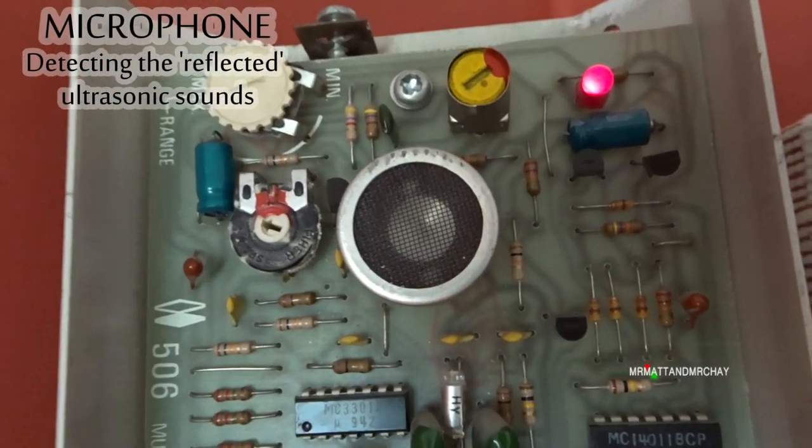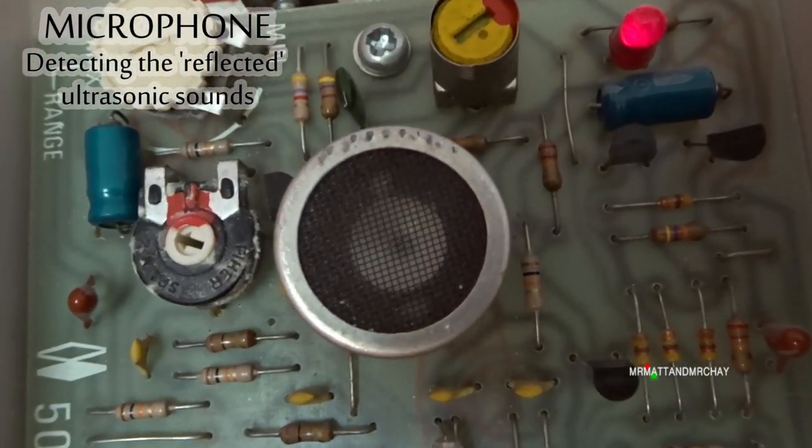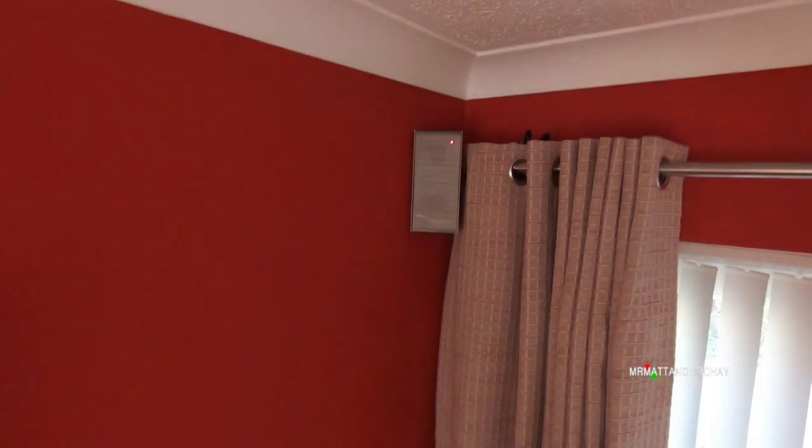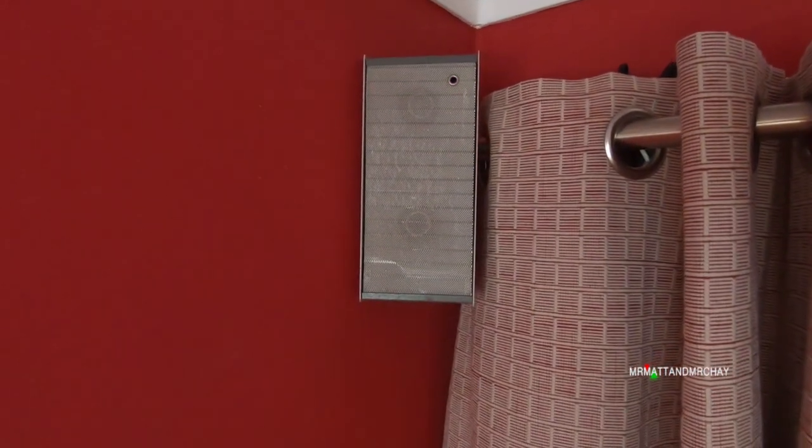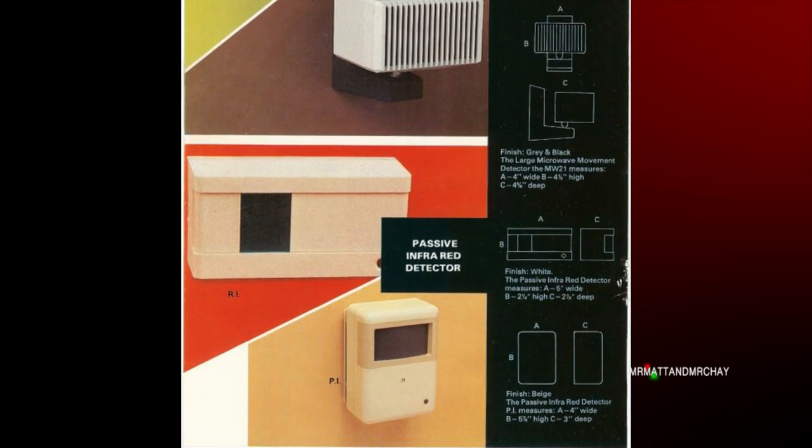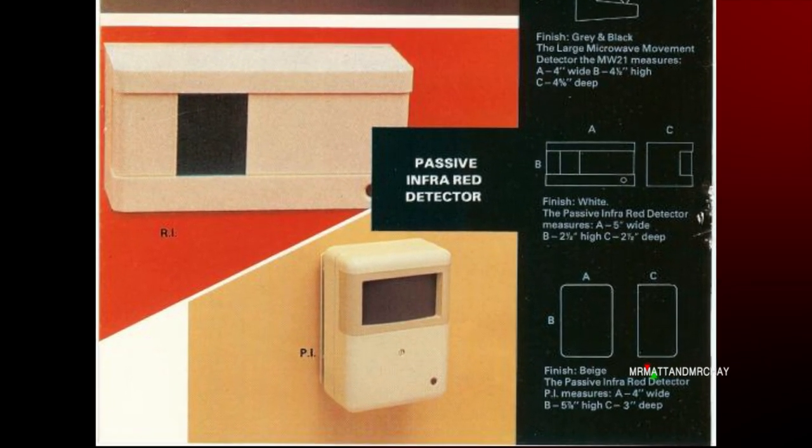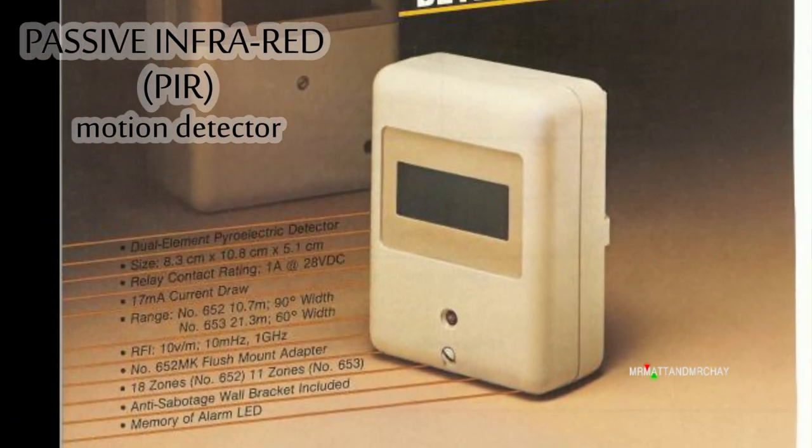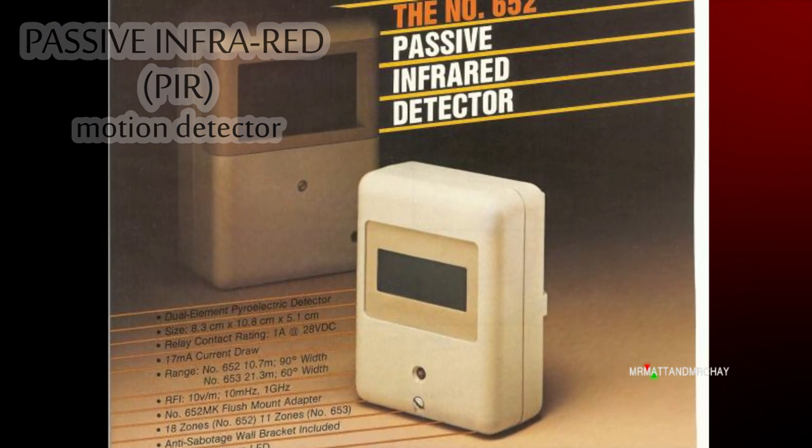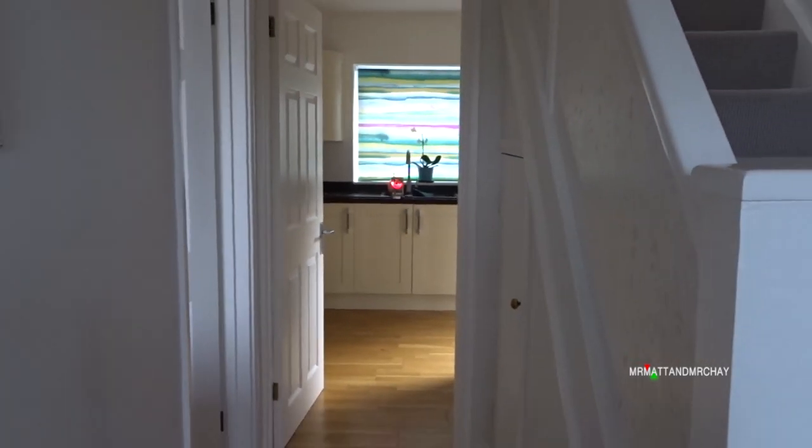It generated less false alarms than microwave, but the early types were huge and ugly. Imagine having this in the corner of your living room. The 1980s came the introduction of the PIR motion detector. Less false alarms than microwave and ultrasonic, and better at detecting motion reliably and at greater distances.